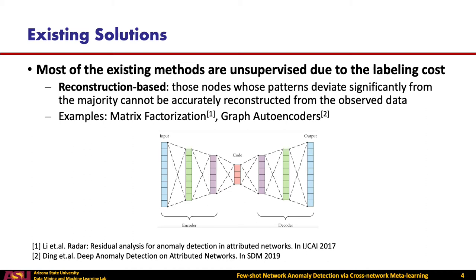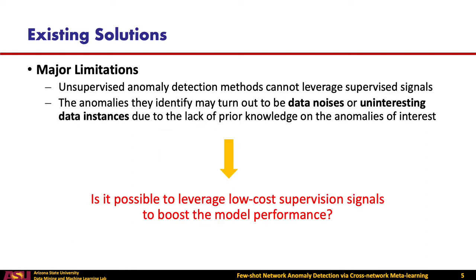As a proven paradigm, reconstruction-based methods have shown their effectiveness in this task. The intuition is that those nodes whose patterns deviated significantly from the majority cannot be accurately reconstructed from the observed data. Followed by this idea, a series of methods based on variational autoencoders and graph autoencoders have been proposed. However, unsupervised anomaly detection methods are still not good enough. The main reason is that those methods cannot leverage any supervised signals. The anomalies they identify may turn out to be data noises or uninteresting data instances due to the lack of prior knowledge of the anomalies of interest.